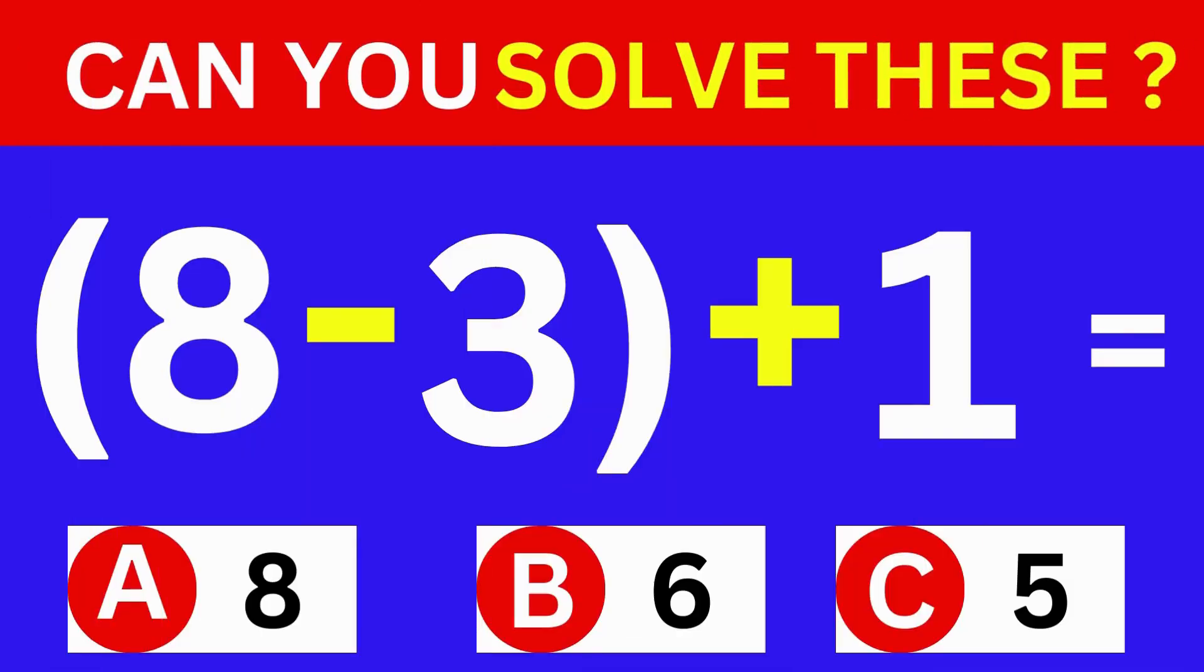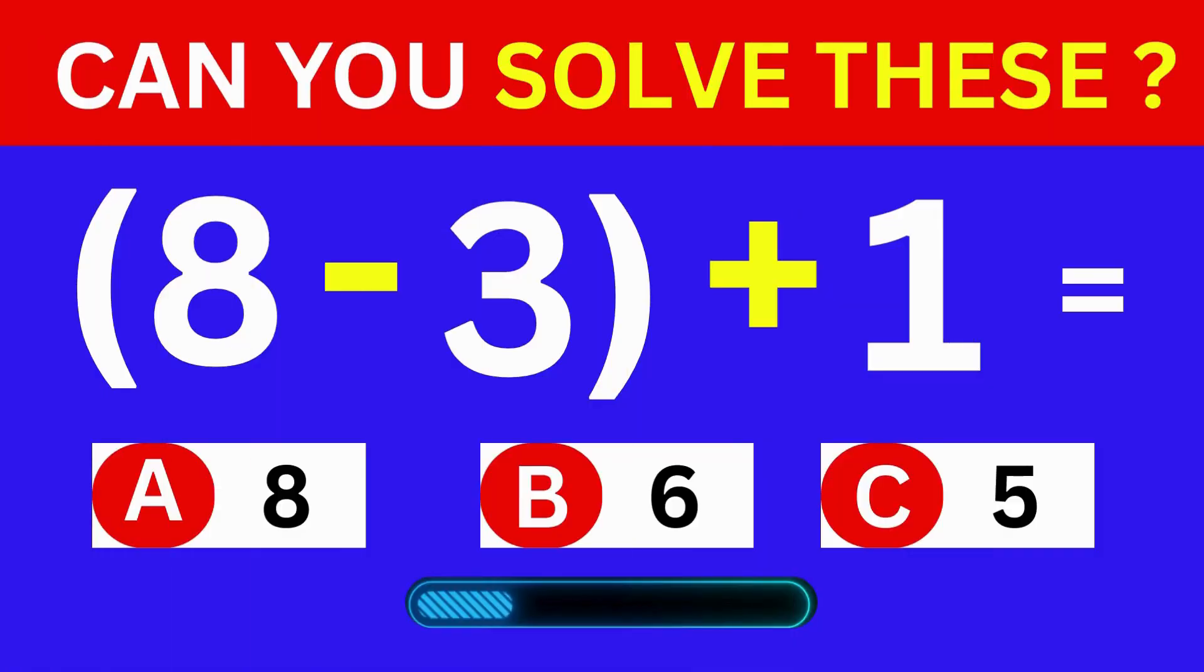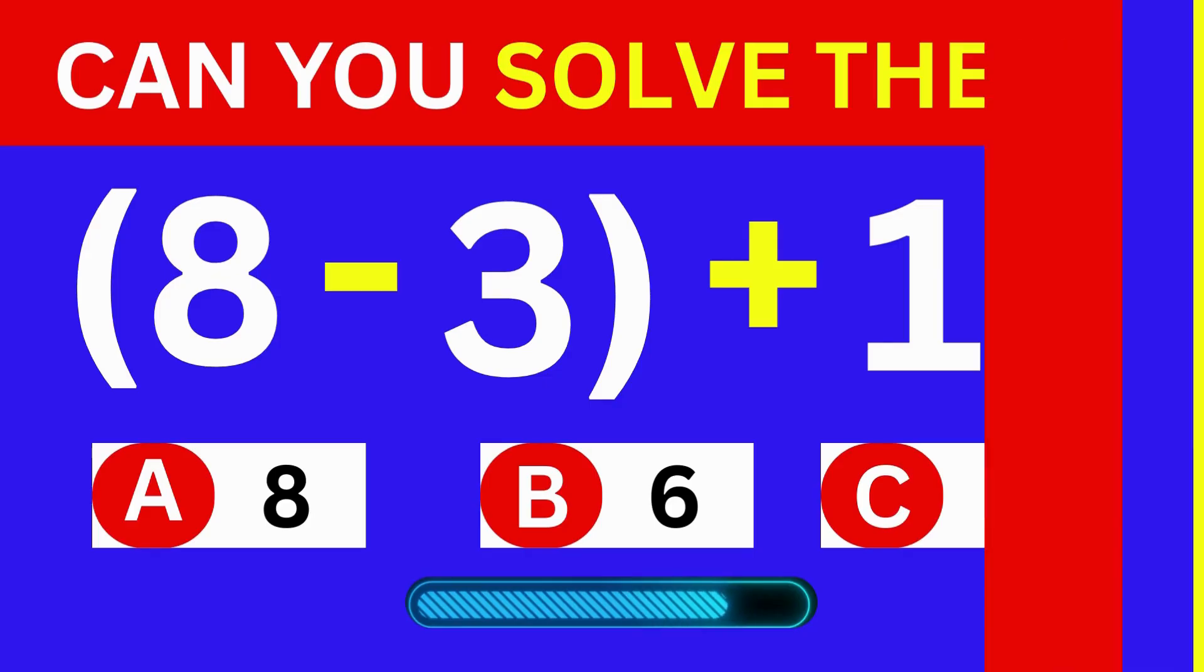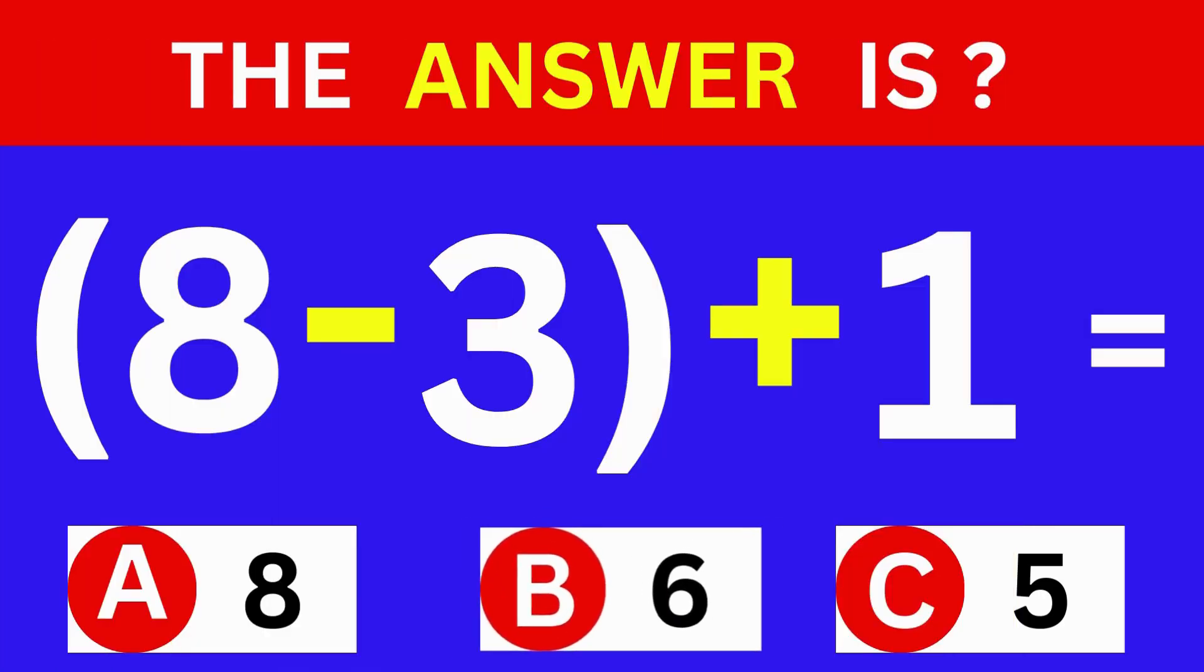8 minus 3 plus 1 equals. A. 8. B. 6. C. 5. The answer is Option B. 6.